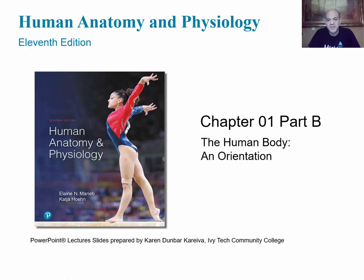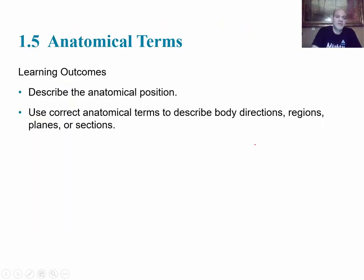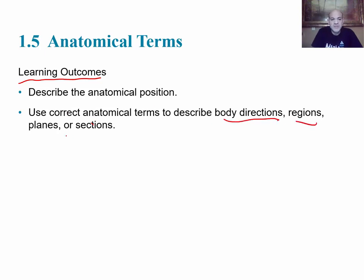This is the second part of a video lecture on chapter one, dealing with an orientation of the human body, looking at section five: anatomical terms. The learning objectives for this section include the student describing anatomical position and using correct anatomical terms to describe body directions, regions, planes, and sections.